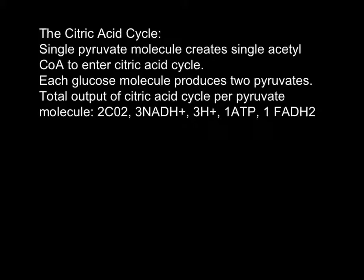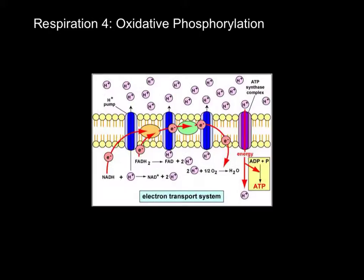Most of the energy made available by the oxidative steps of the citric acid cycle is transferred to the electron acceptor NAD+ to form NADH. The next standard I'll be covering is respiration four, which is oxidative phosphorylation.